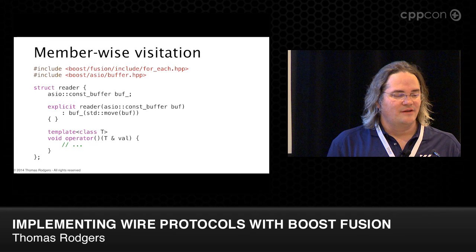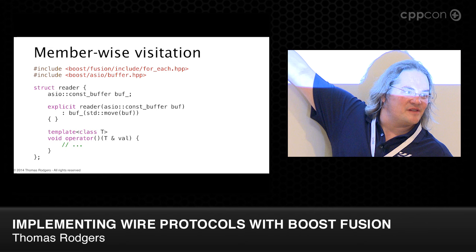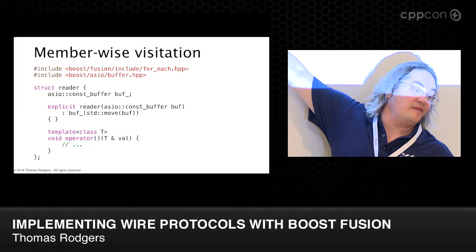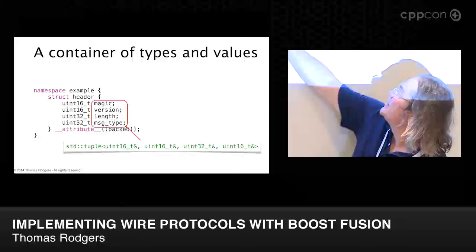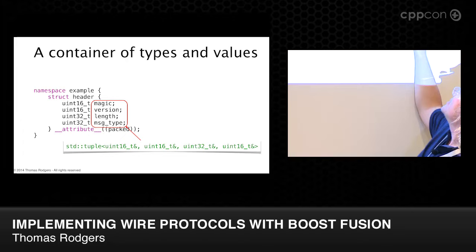When for_each iterates the struct, the call operator is presented with a reference to each member in turn — the first uint16_t, then the second, and so on. The for_each iteration tracks which element is being visited; there's no need to keep count manually inside the visitor, as that is captured in the iteration that's part of the for_each implementation.